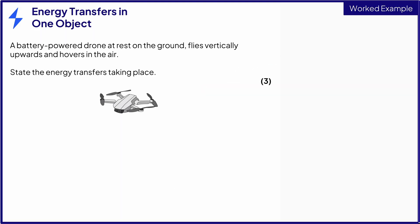Let's take a look at an example exam question. A battery-powered drone at rest on the ground flies vertically upwards and hovers in the air. State the energy transfers taking place. The drone is initially at rest on the ground — at rest means it is stationary, not moving. The system is defined as the drone flying vertically upwards from its stationary position and hovering there, so we need to identify the energy transfers taking place just for that piece of motion.